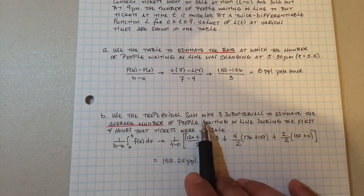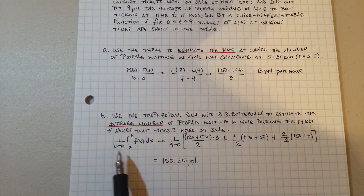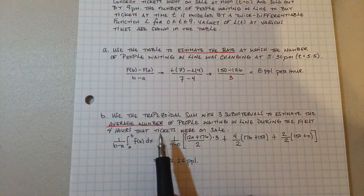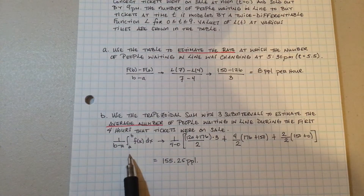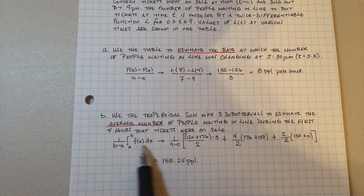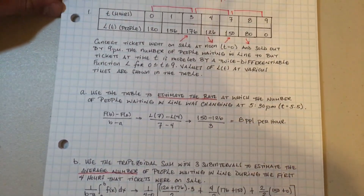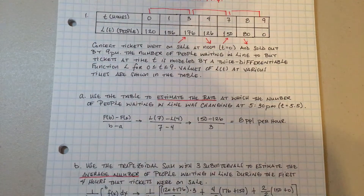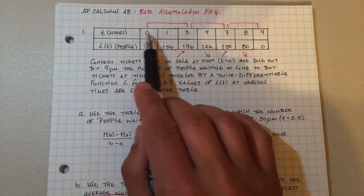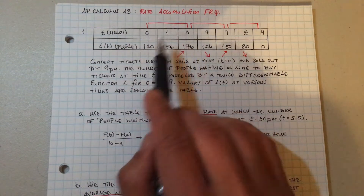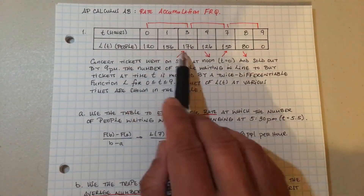The second part says to use a trapezoidal sum with three sub-intervals to estimate the average number of people — and 'average' is your clue to use the mean value theorem. The average number of people waiting in line during the first four hours: that's from 0 to 4. The trapezoid formula is one-half times the sum of the bases times the perpendicular height. These are vertical trapezoids. From 0 to 3, the base is 3, and your two heights are 120 and 176.